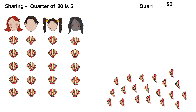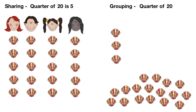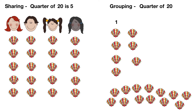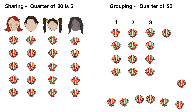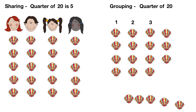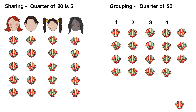Or we can find a quarter of 20 by grouping in fours like this. One group of four, two groups of four, three groups of four, four groups of four, five groups of four — so a quarter of 20 is five.